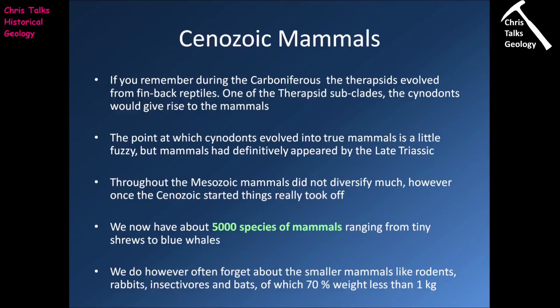Now let's move on to focus on individual groups of mammals during the Cenozoic. During the Carboniferous in the Paleozoic, the therapsids — a group of mammalian-like reptiles — evolved from a group of fin-backed reptiles called the pelycosaurs. One of the therapsid subclades, a group called the Cynodonts, would eventually give rise to the mammals. The point at which the Cynodonts evolved into true mammals is a little fuzzy given several transitional species, though we definitely know we had mammals by the late Triassic.